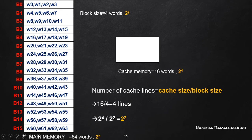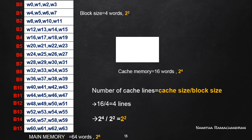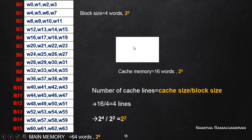Just like main memory blocks, inside the cache memory we can also consider different cache blocks, which are also called cache lines. One important point to keep in mind is that the main memory block size must match the cache block size. Since the block size is given as 4 words, the cache line or cache block size must also equal 4 words.